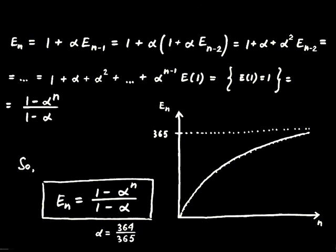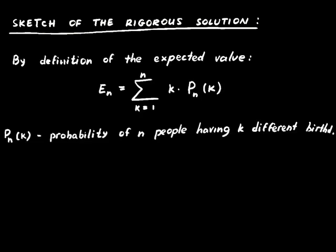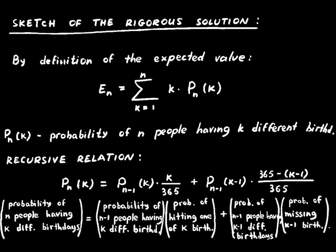So far so good. But how can we get the rigorous solution? We are going to do that by invoking the expected value definition. The expected number of birthdays involves p_{n}(k), the probability of n people having k different birthdays. You can verify that those p_{n}(k) values satisfy a recursive relation. This recursive relation expresses the fact that the probability of n people having k different birthdays equals the probability of n-1 people having k different birthdays times the probability of hitting one of those k birthdays, plus the probability of n-1 people having k-1 different birthdays times the probability of missing those k-1 birthdays.